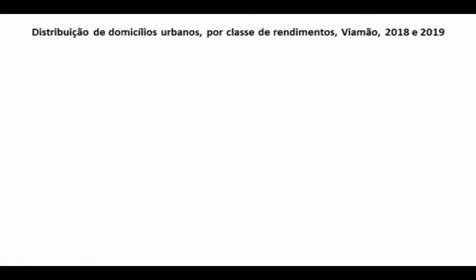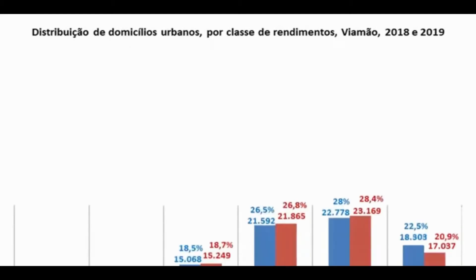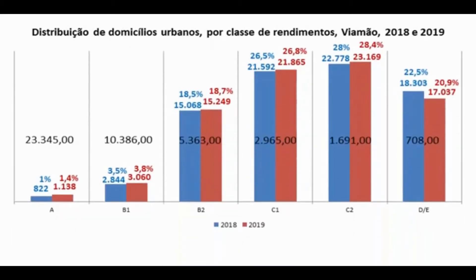Olhando para os domicílios urbanos divididos por classes de rendimentos, há uma variação muito pequena entre 2018 e 2019. As classes A e B1 são aquelas com menor concentração de domicílios. O parâmetro de renda média mensal para o domicílio na classe A é de R$ 23.345,00 e na classe B1, R$ 10.386,00, referente a 2019.